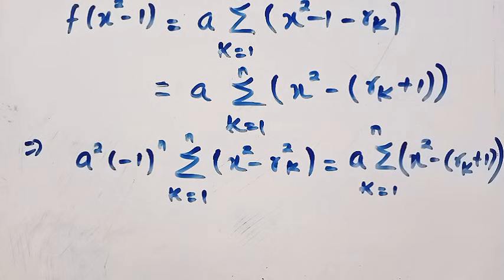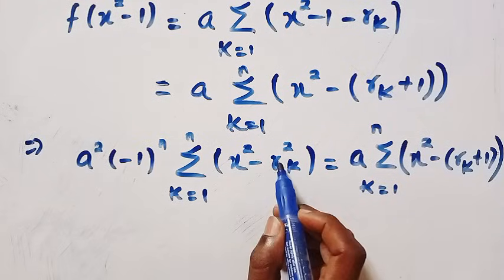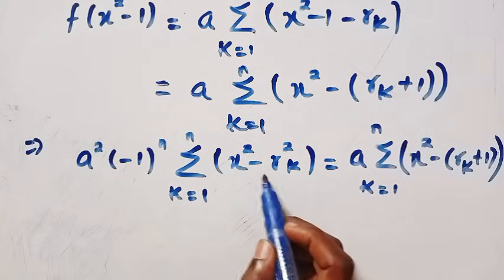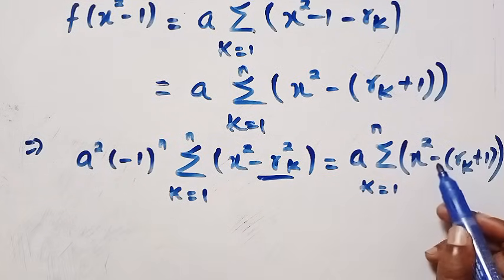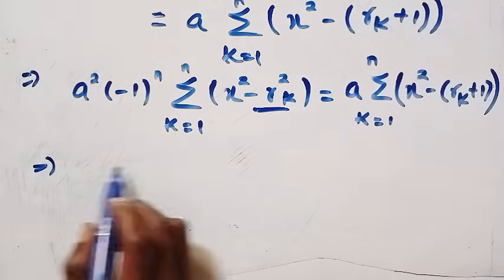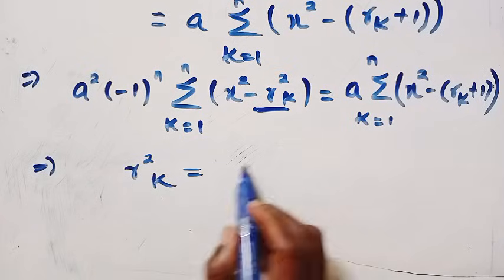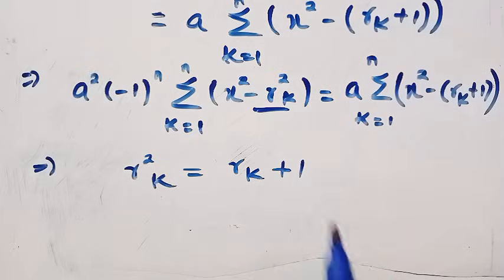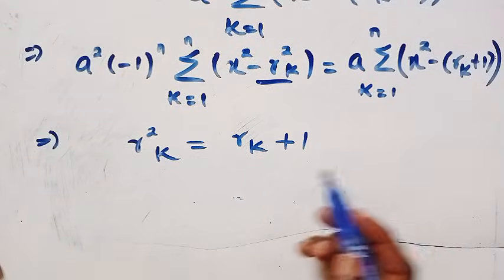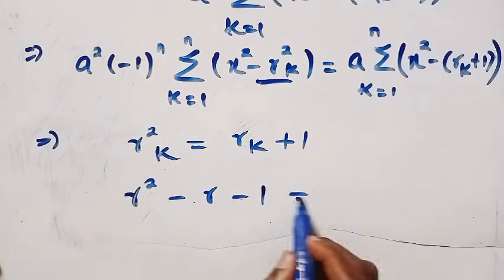What we need here is to get the real roots. Since we have chosen r to be the real roots, we equate the roots together: -rₖ² equals -(rₖ + 1). This gives us rₖ² equals rₖ + 1, and rearranging: r² - r - 1 = 0.